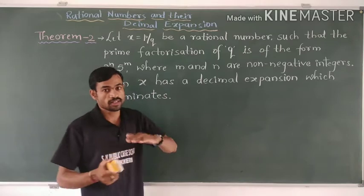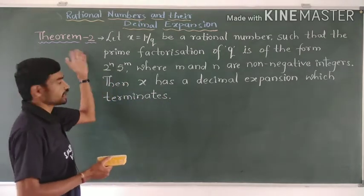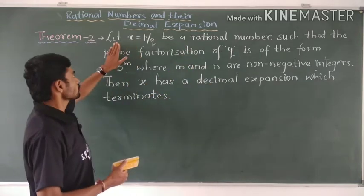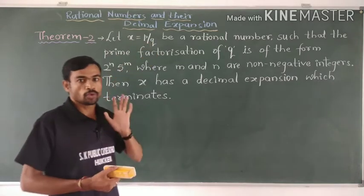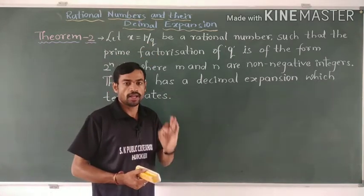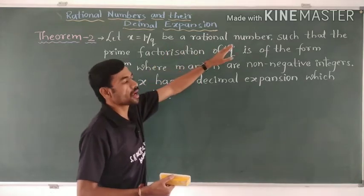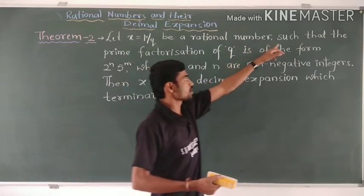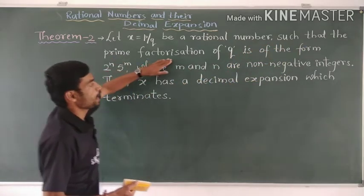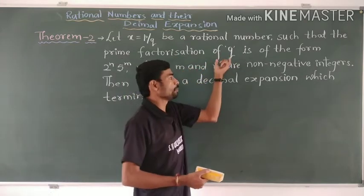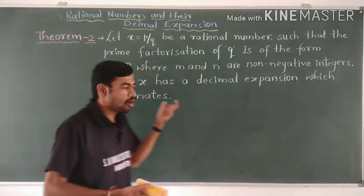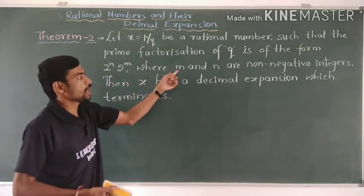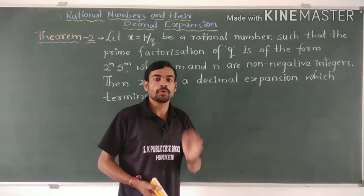But in this theorem — the converse of Theorem 1 — the second theorem states: let x equals P by Q be a rational number, such that the prime factorization of Q is of the form 2 to the power n into 5 to the power m, where n and m are non-negative integers.